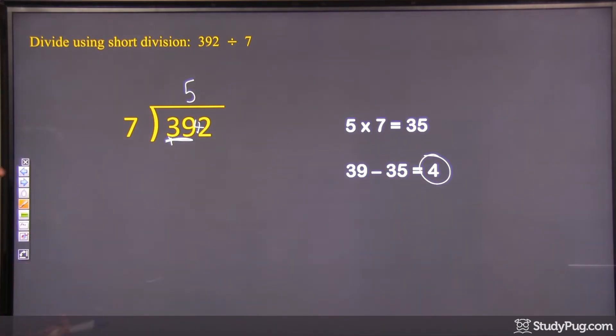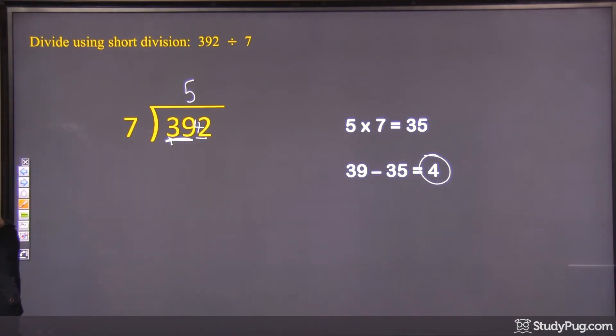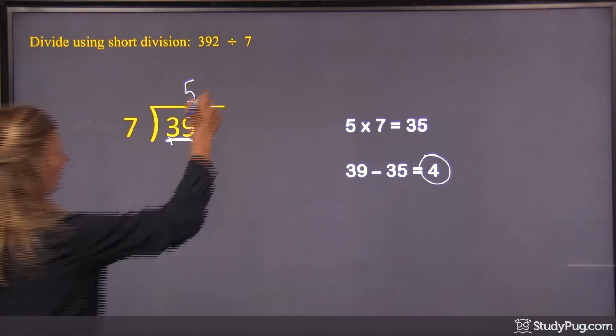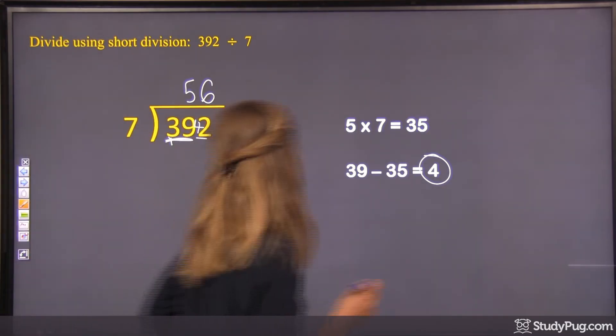So then our next step of division would be 42 divided by 7. 42 divided by 7, that goes evenly, right? 7 times 6 is 42. So we put a 6 there above the 2. Alright, so then our quotient is 56.